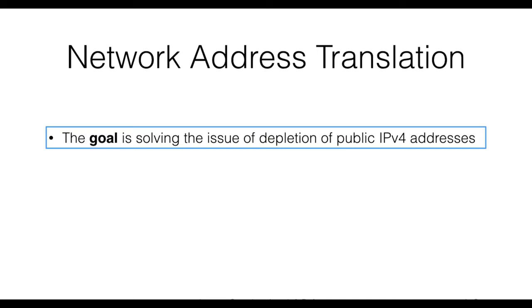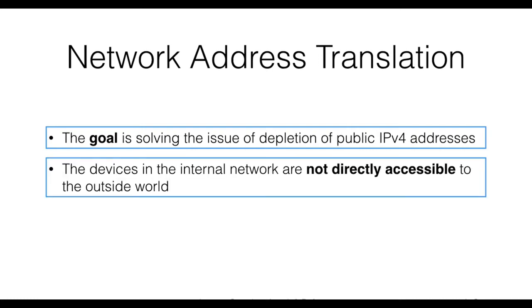Therefore, it is important to understand that NAT is not a security mechanism per se. However, and this is the reason we treat NAT in this course, it indirectly provides a security layer by isolating the hosts in the internal network from the external network. We will see more on the security implications of NAT later in this lecture.